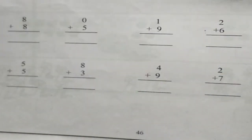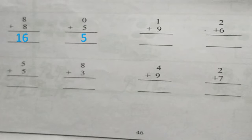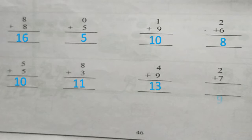Now next sums — I want you to pause the video, solve it on your own, and then check the answers. Eight plus eight is sixteen. Zero plus five is five. One plus nine is ten. Two plus six is eight. Five plus five is ten. Eight plus three is eleven. Four plus nine is thirteen. Two plus seven is nine.